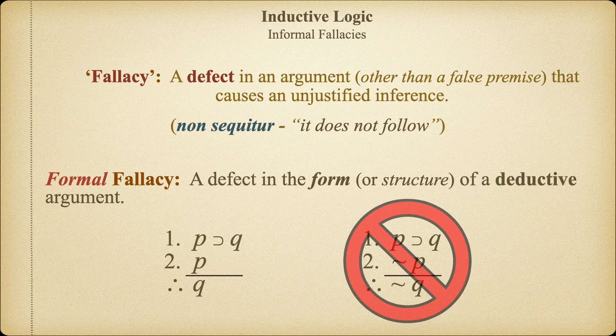Formal fallacies are always about the structure of the argument. If it's formed correctly, the conclusion must follow. If it's formed incorrectly, the conclusion will not follow.